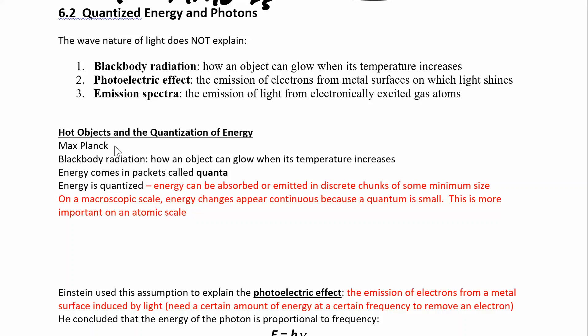And so Planck, Max Planck, was one of the scientists working on black body radiation. And he came up with this idea that energy comes in packets, and he called them quanta, or that energy is quantized, which means it's not continuous.